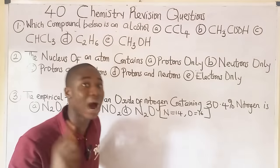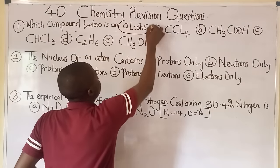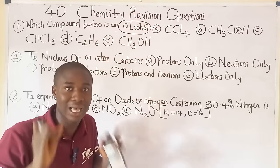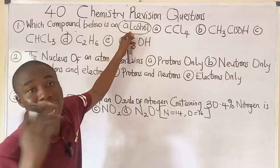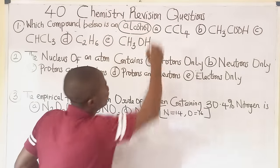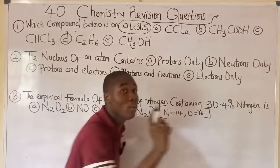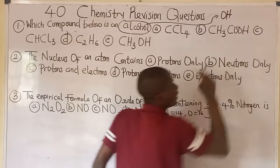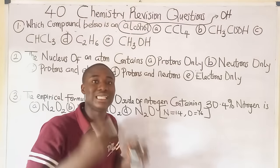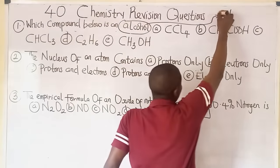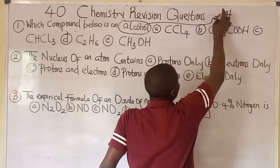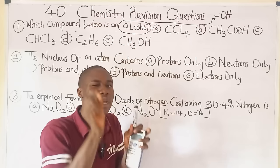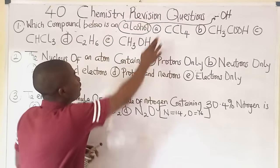To solve this question, we have to understand what an alcohol is. Alcohols are a group of organic compounds, and for us to easily identify a compound that is an alcohol, it must have the OH functional group, which is simply called the hydroxyl functional group. If we have the OH functional group in a compound, then that compound is an alcohol.